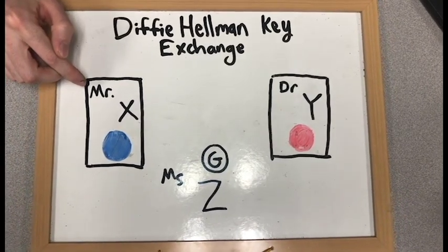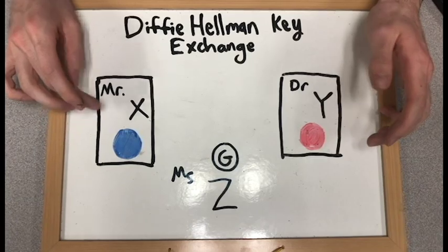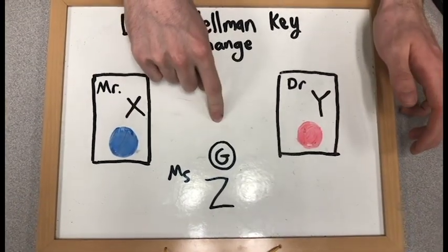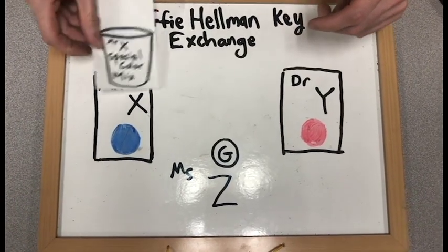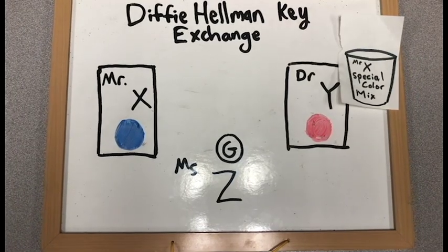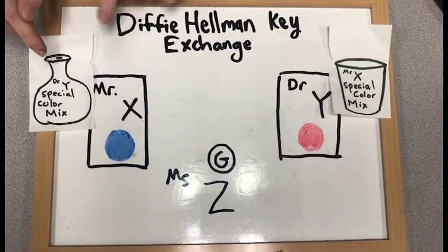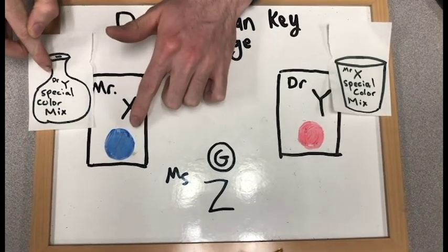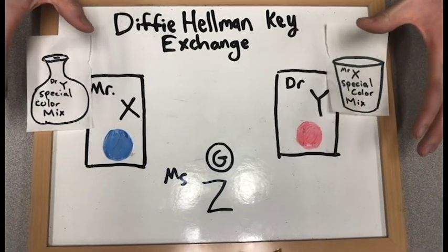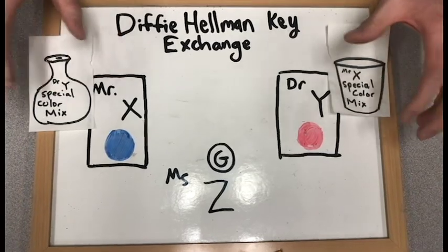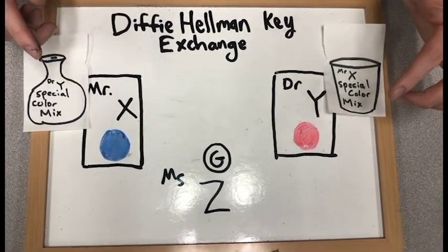Say Mr. X has their own private color blue that neither Dr. Y nor Ms. Z know. And Dr. Y has their own private color red that neither Mr. X nor Ms. Z know either. Then there is a public color G which is visible to all three of them. Mr. X mixes their blue with the public color green and sends it to Dr. Y. Dr. Y takes their private color red with the public color G and sends that mixture to Mr. X. Then Mr. X mixes his private blue with Dr. Y's color mixture and Dr. Y mixes their color red with Mr. X's color mixture. And this is the solution. They will both end up with the same color mixture if they complete this process. Both X and Y know the key color, but it is very difficult for Ms. Z to figure it out without knowing the two private colors.